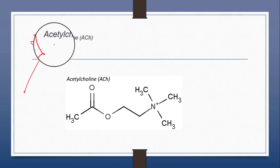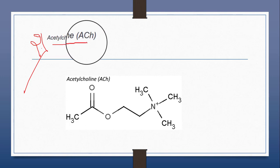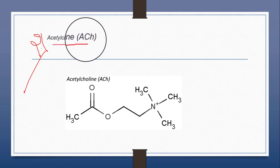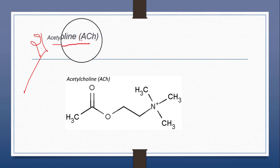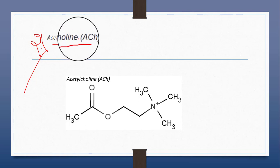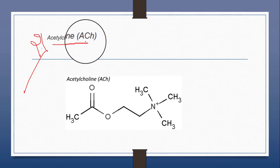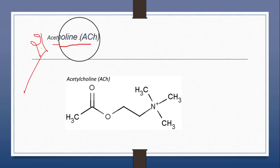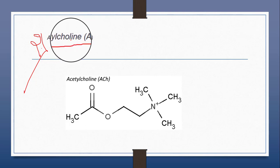The second specific neurotransmitter is acetylcholine. Acetylcholine is used both in the central and peripheral nervous system, in particular at the neuromuscular junction (NMJ). It is synthesized in neurons from choline and acetyl-CoA enzyme. Acetylcholine is an excitatory neurotransmitter and binds to two different receptor types: the nicotinic acetylcholine receptor and the muscarinic acetylcholine receptor.